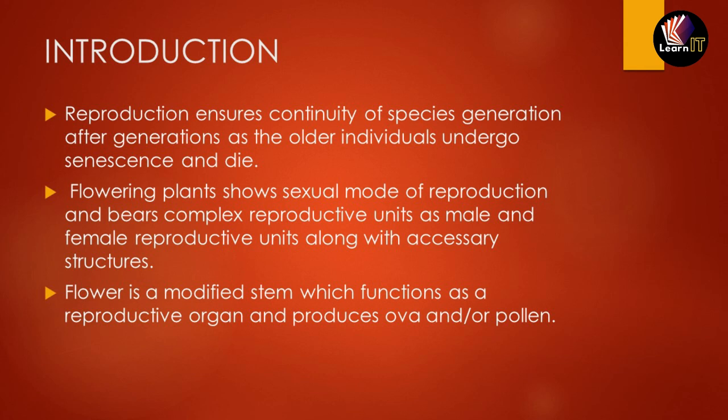In this chapter, flowering plants will show the sexual mode of reproduction and always have a complex reproductive unit — the male reproductive unit and the female reproductive unit — with accessory structures. A flower is a modified stem that acts as the reproductive organ; the female produces ova and the male produces pollen grains.